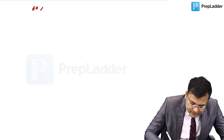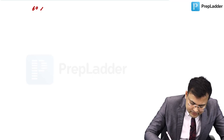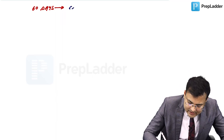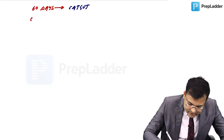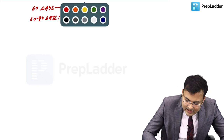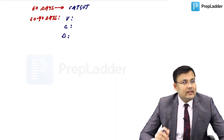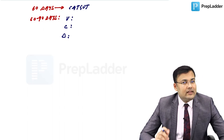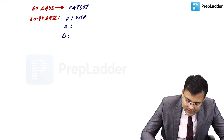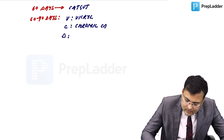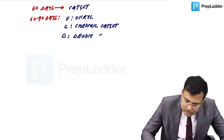Summary of suture absorption timelines: catgut is absorbed in 60 days. Sutures absorbed in 60 to 90 days — mnemonic VCD: vicryl, chromic catgut, and dexin (polyglycolic acid). Absorbed in 90 to 120 days: monocryl (polyglycaprone), used for subcuticular suturing. Absorbed in 180 days: PDS (polydioxanone).